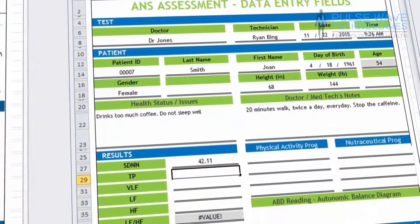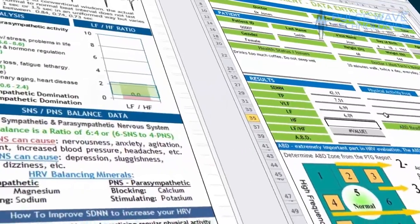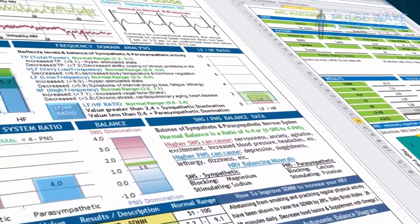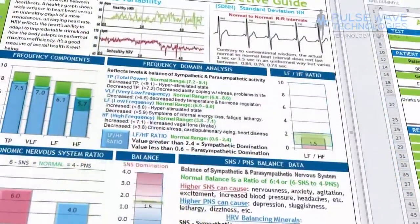With the data input sheet provided, you simply fill out the fields with the data from the report. The interpretive guide will automatically turn the data into a compact one-page document so the patient can easily understand their results and recommendations.